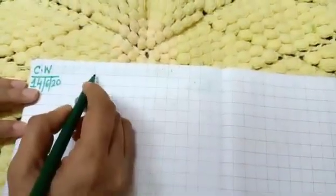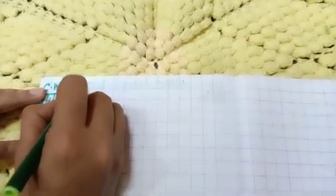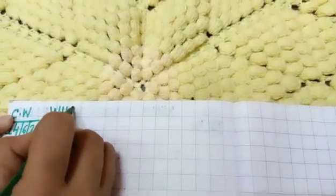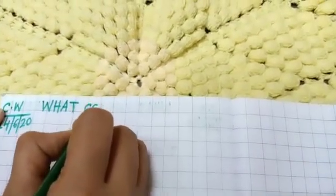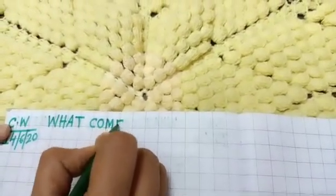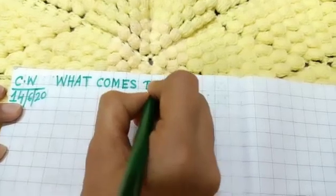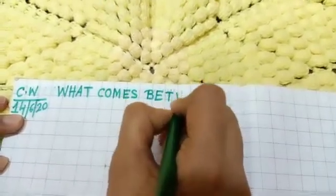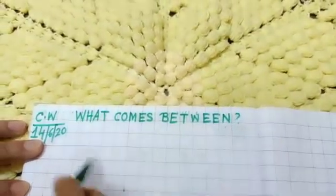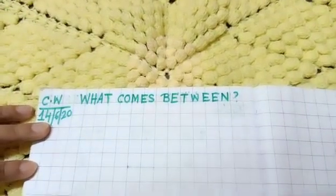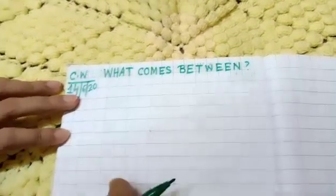Now write here what comes between. Here you will write what comes between. Ok children. Write W, H, A, T. What? C, O, M, E, S. What? Between. B, E, T, W, E, E, N. Ok children, you will write what comes between. Write, written everyone. Ok.